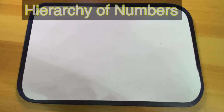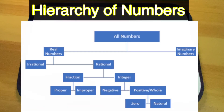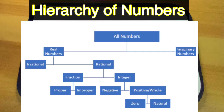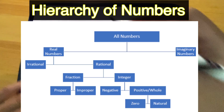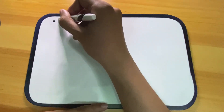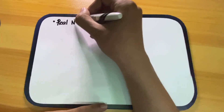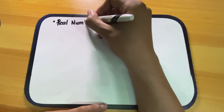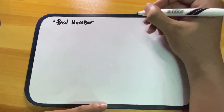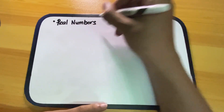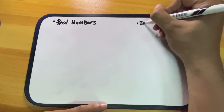Hello everyone. We have here the hierarchy of numbers, or all numbers. In all numbers, they are divided into two groups: real numbers and imaginary numbers.